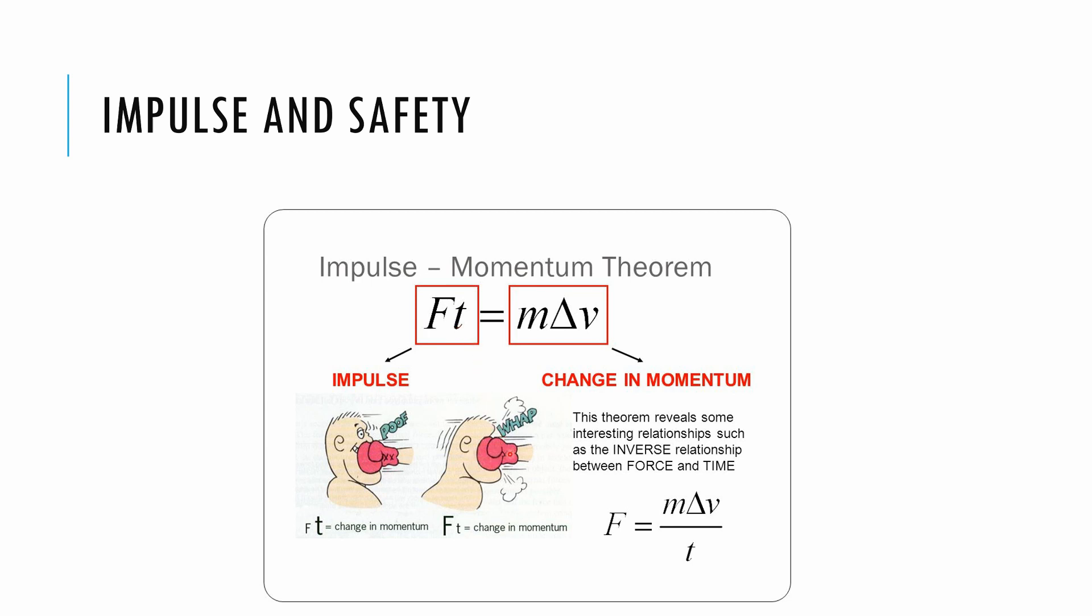So for example, the boxer's fist comes in with a certain speed, and we're going to decrease that speed down to zero with our face. So the mass of the boxer's fist and the change in speed are fixed. The change in momentum is set. There's no way to affect the change in momentum for this collision. The only things that can change are the force and time. So we can see that there's an inverse relationship between force and time. For example, if we solve for force, we can't change the mass of the boxer's hand. We can't change the change in velocity. The only thing we can affect is the time. So you have two options.